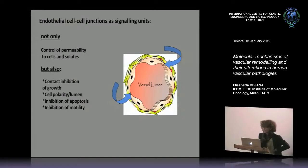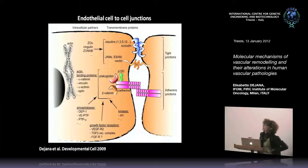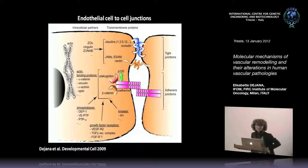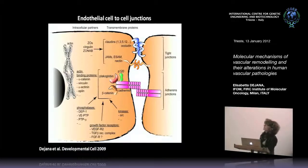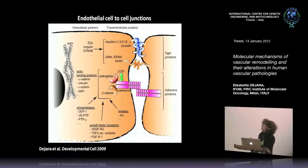Let me show you how junctions are organized. This is a simplified cartoon to give some ideas of the molecules implicated in endothelial junction organization. You can distinguish at least two types of junctions: tight junctions and adherent junctions, very similar in structure to what has been described in epithelial cells. In tight junctions, adhesion is promoted by members of the claudin family, which are tetraspanin transmembrane proteins mediating very tight adhesion between cells. There are also small immunoglobulins including JAM, Ease, and Nectin that contribute to tight junction adhesion.